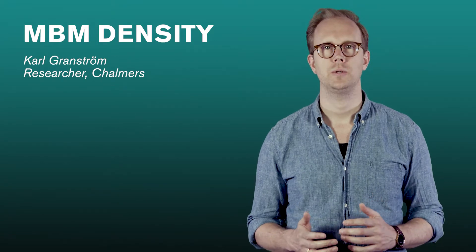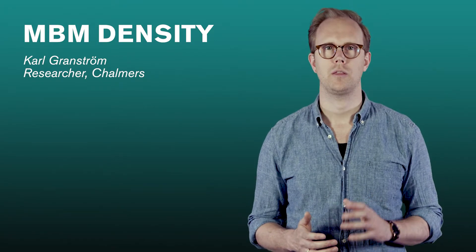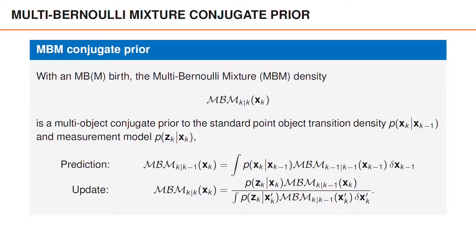Hi! In this video, we will present the multi-Bernoulli mixture conjugate prior. If we have a multi-Bernoulli birth, or a multi-Bernoulli mixture birth, then the multi-Bernoulli mixture density, denoted MBM, is multi-object conjugate prior to the standard point-object transition density and measurement model.